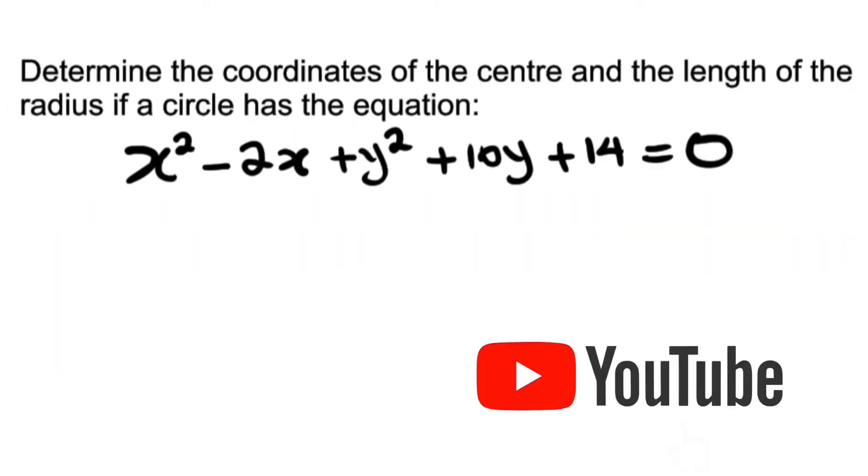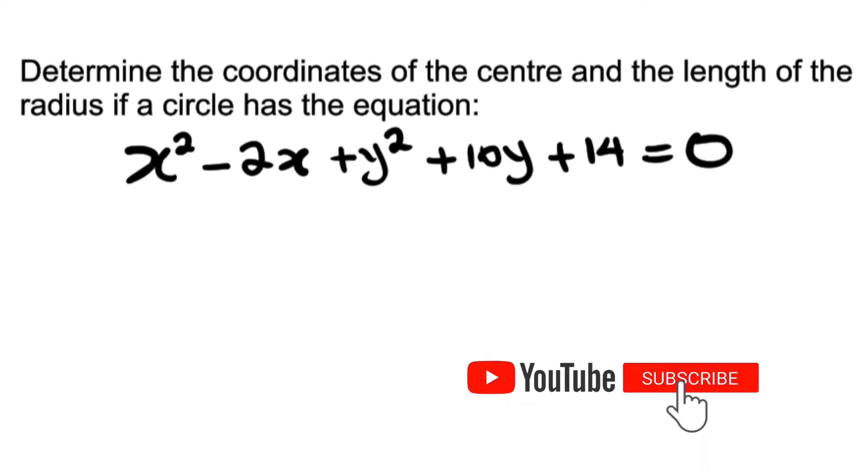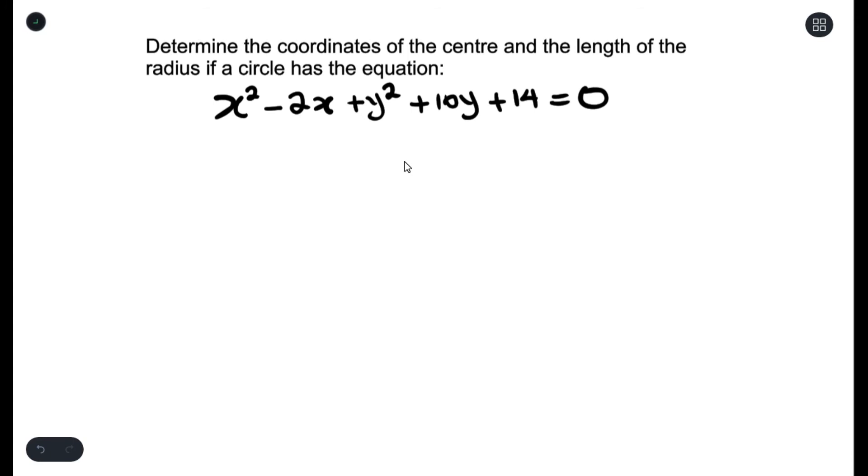This question says, determine the coordinate of the center and the length of the radius if a circle has the equation x²-2x+y²+10y+14=0. Now we understand that this equation doesn't look the way we want it to look. We always want an equation of a circle when the center is not at the origin to always look like this. And this doesn't look like that.